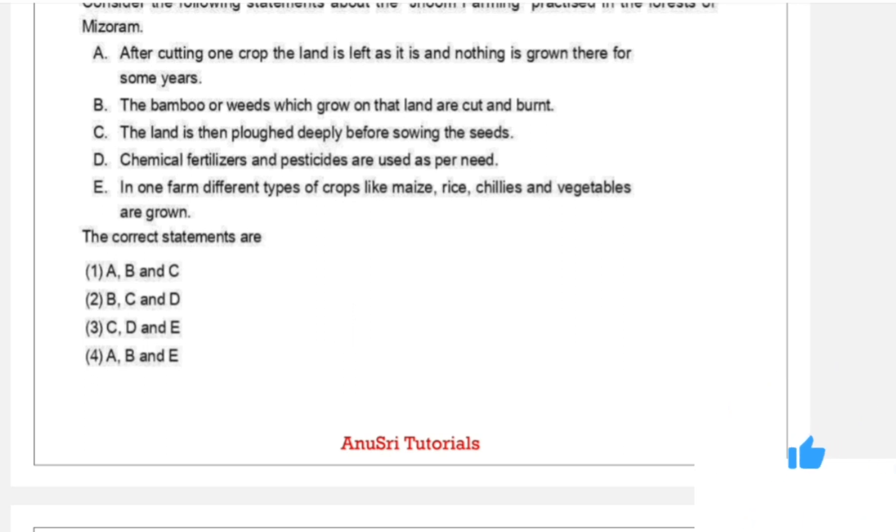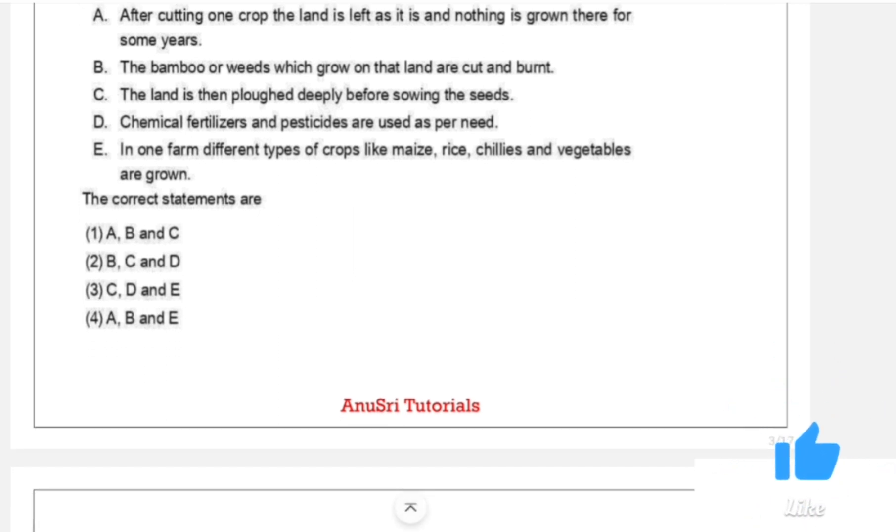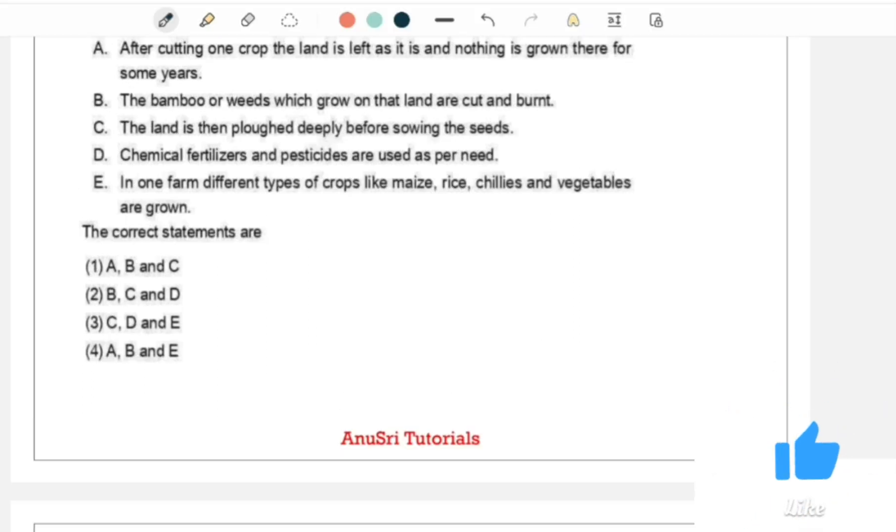Option E: In the form of different types of crops like maize, rice, chilies and vegetables are grown. The correct statements are: Option 1 A, B and C, second one is B, C and D, third one C, D and E, fourth one is A, B and E. Option 1 is right.